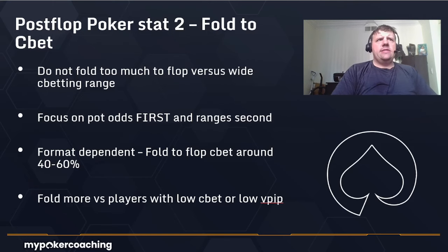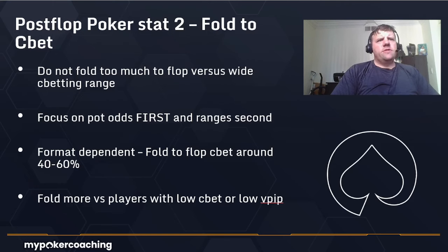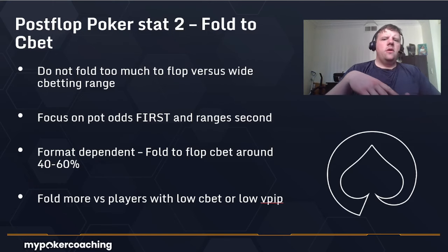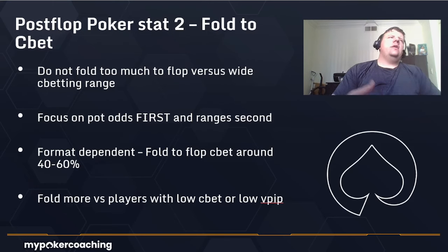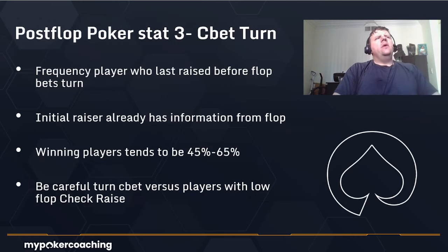The most important thing when facing a c-bet is the bet size. It's format-dependent, but flop fold to c-bet is around 40 to 60 percent depending on format. Fold more versus players with low c-bet stats or low VPIPs because they'll have tighter ranges. Versus very loose players, call more because they have weaker hands — or raise more. We can tie in preflop stats to decide our postflop strategies.